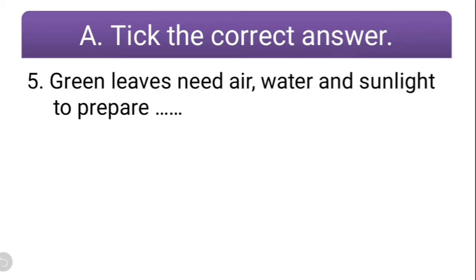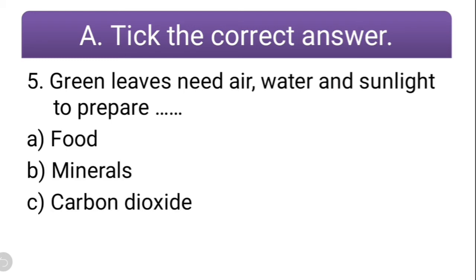Question number five: green leaves need air, water, and sunlight to prepare food — options: minerals, carbon dioxide, heat. What do they prepare with the help of air, water, and sunlight? They prepare food. So the correct option is A.